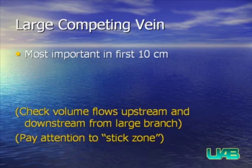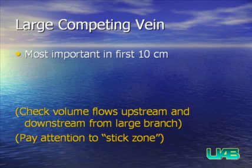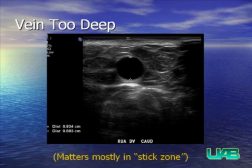Moving away from stenosis or occlusion, we look at large competing veins. These are most important in the first 10 centimeters from the anastomosis into the early draining vein. Look for large branch vessels drawing flow away from the main vein, because the vein needs adequate flow to create a shear effect allowing it to dilate. Pay special attention to the caudal portion of the arm — the stick zone where hemodialysis needles are placed.